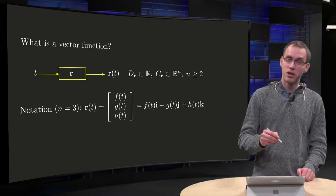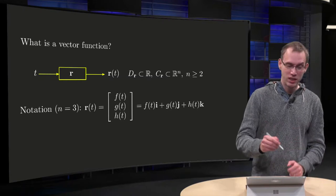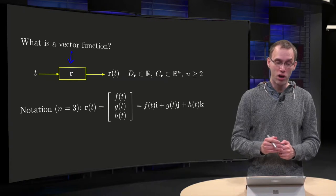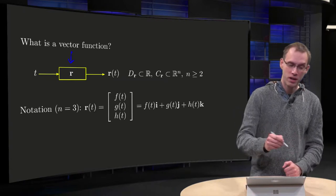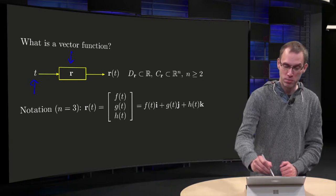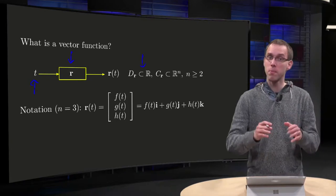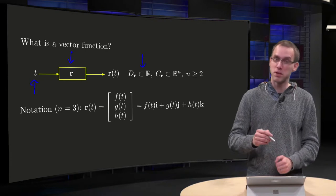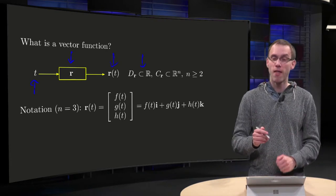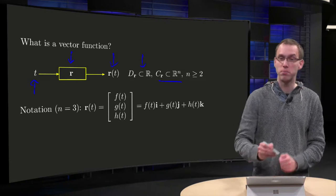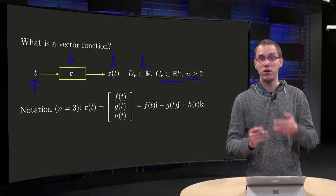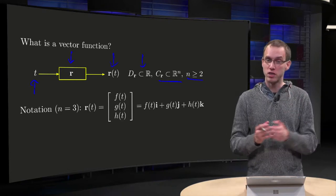So what's a vector function? A function was some kind of engine over here, but now the engine is called r, boldface r, vector r. Input is some variable t, but the domain is some subset of R, so t is just some number. Then the engine works and spits out some r as function of t, some vector. So the codomain is now some subset of R^n, where n may be 2 or bigger, so R² or R³, etc.